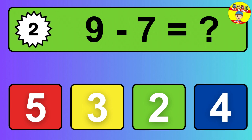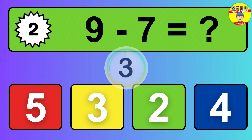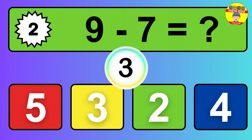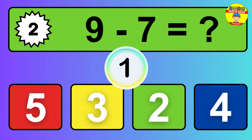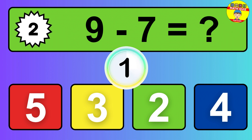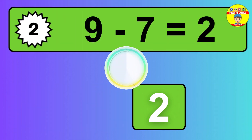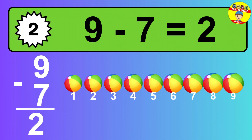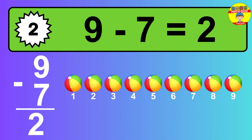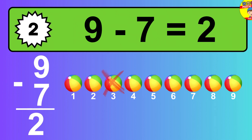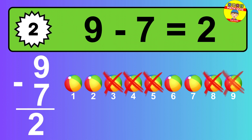Question 2. 9 minus 7 equals what? The answer is 9 minus 7 is 2. Let's count it. 1, 2.